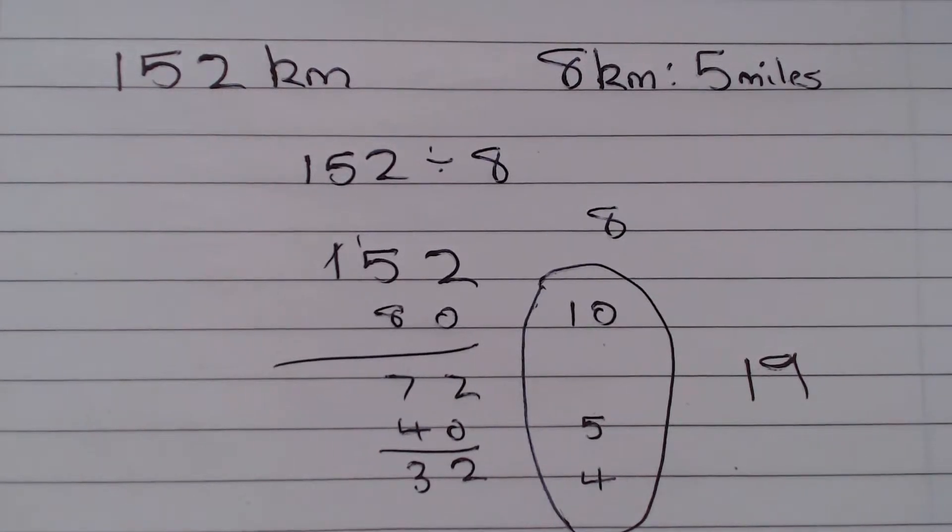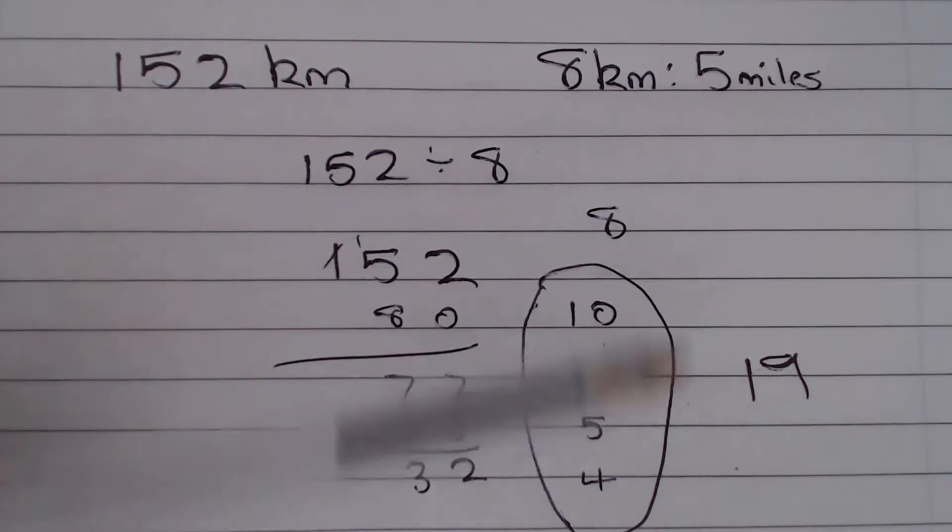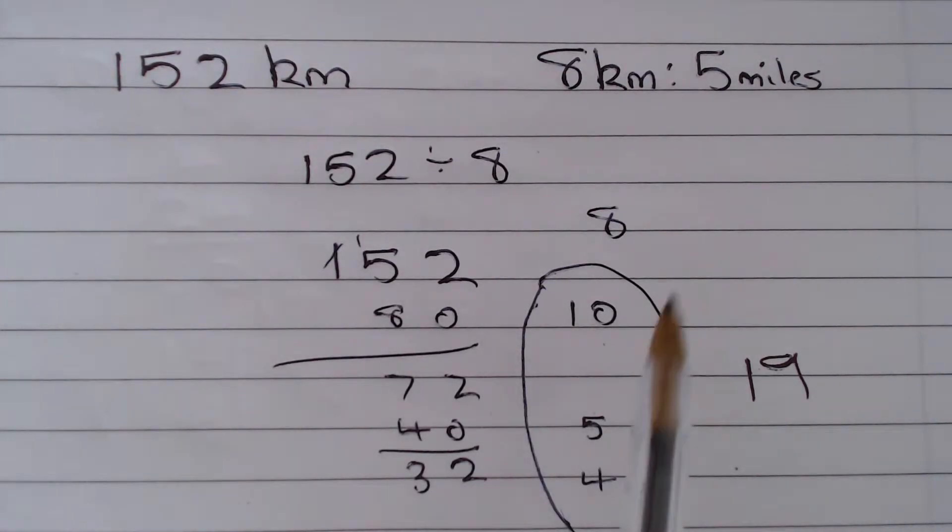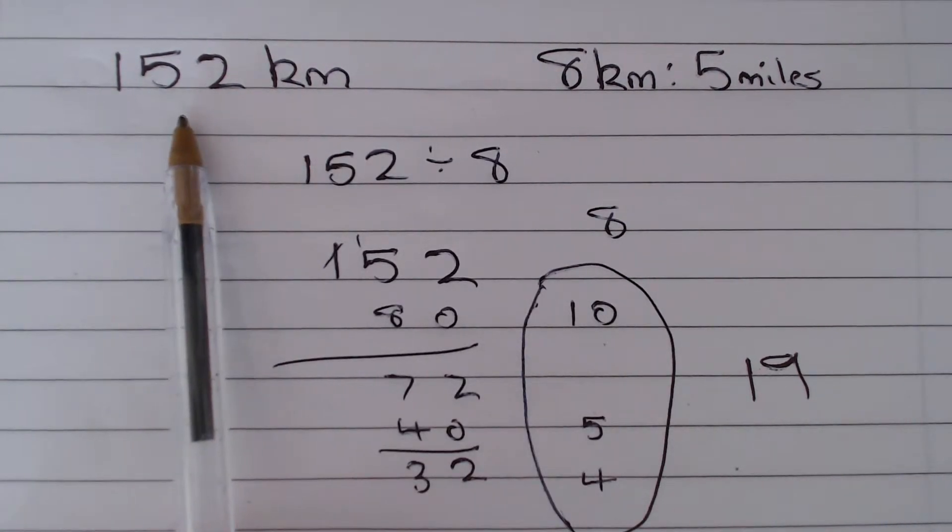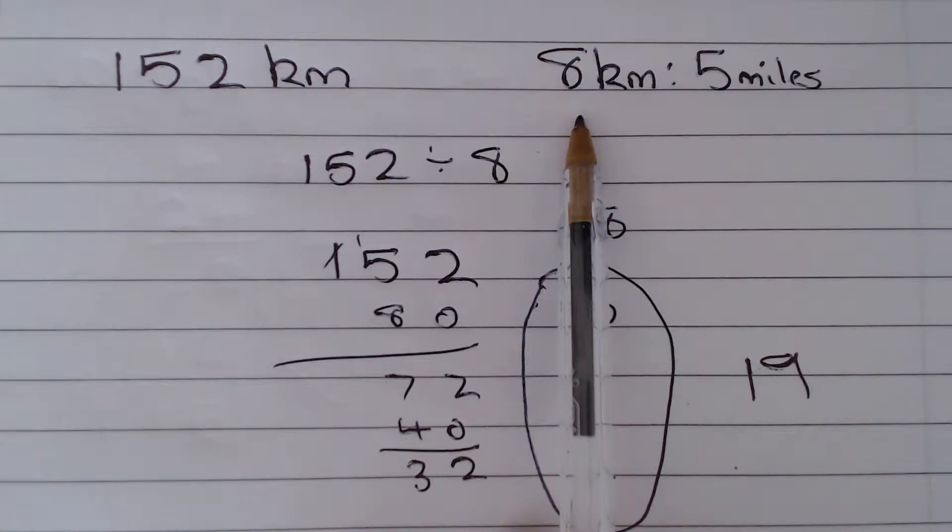Now, there is a slightly easier way of doing this if you can spot it. We have 152 divided by 8 here. Well notice that that is exactly 8 away from 160. And 160 divided by 8 is exactly 20. So it's 20 minus another 8, which would give us 19. But don't worry if you couldn't do that. We can do it this way instead. So we know that this number here is exactly 19 times that number there.